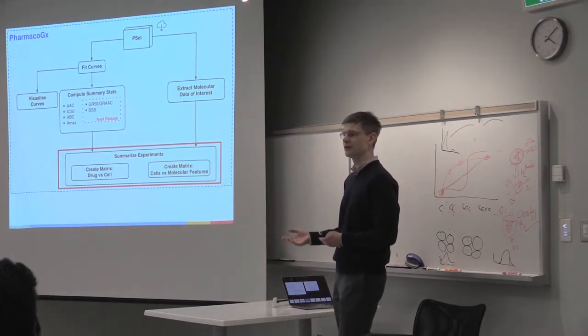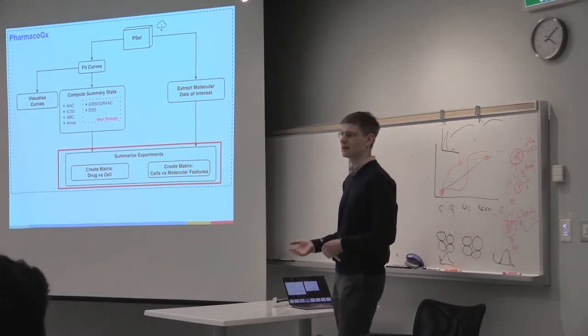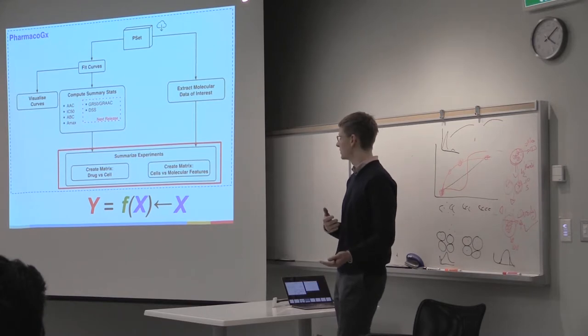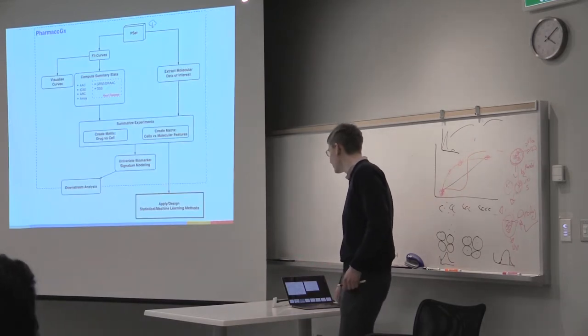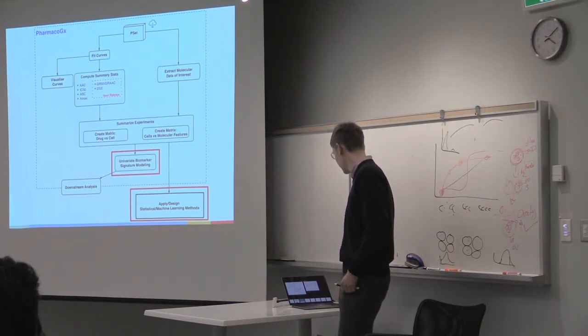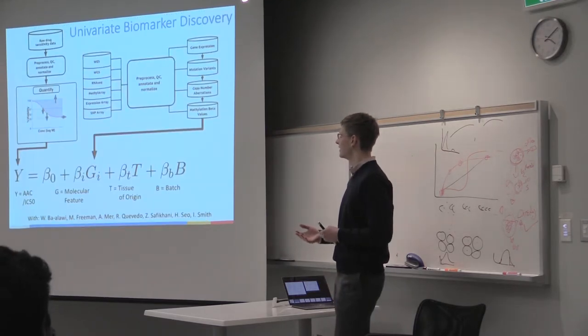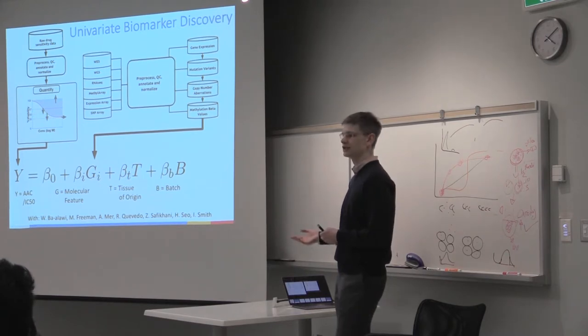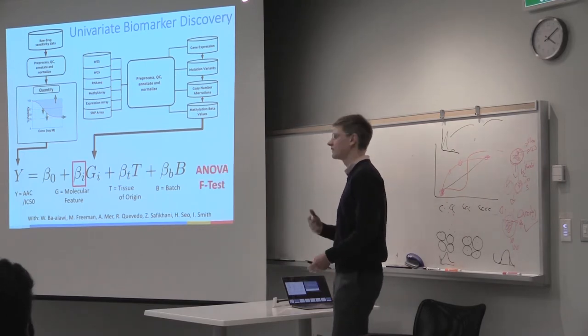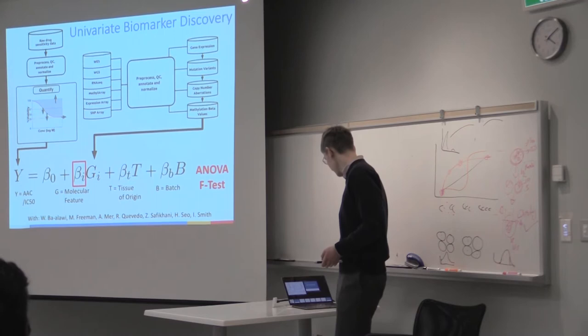The goal is to create two matrices: a drug versus cell line matrix quantifying sensitivity, and a cell versus molecular feature matrix. Now users have a matrix of predictive features and outputs they may want to predict, and can start using this data in their modeling. At this point, you can either exit our ecosystem and use your favorite machine learning or statistical methods, or we provide a simple univariate biomarker discovery pipeline. We're testing linear associations between molecular features such as gene expression and drug response quantification, while correcting for tissue origin and batch effects. To pull out significant associations, we use an analysis of variance F-test.